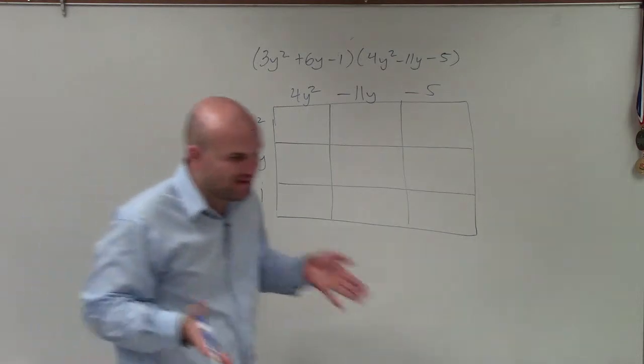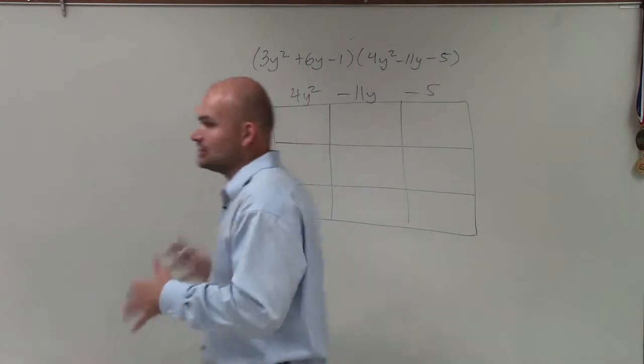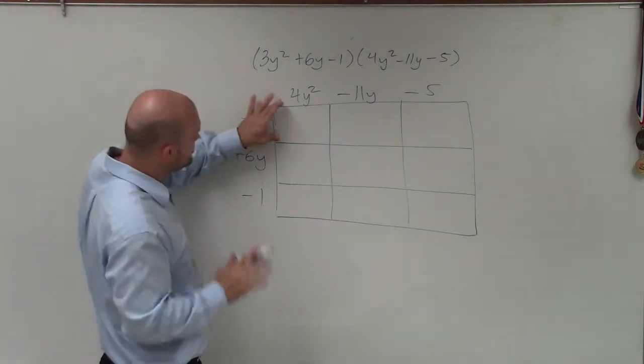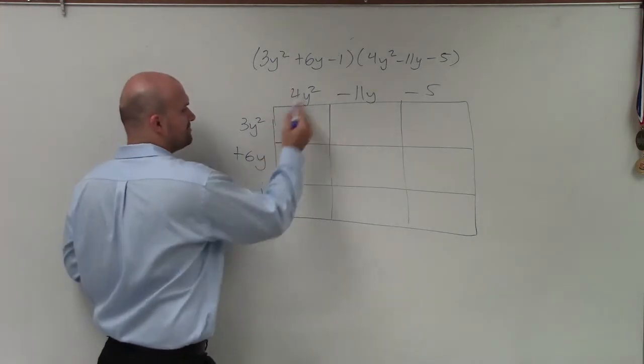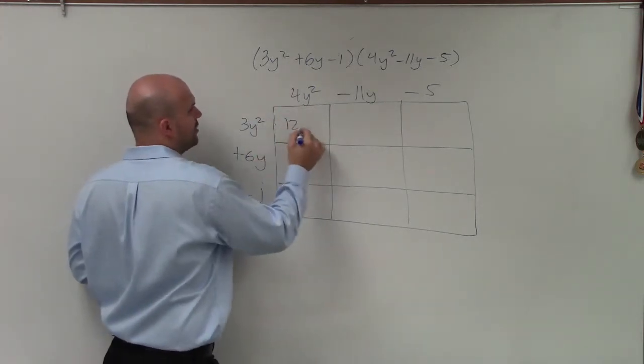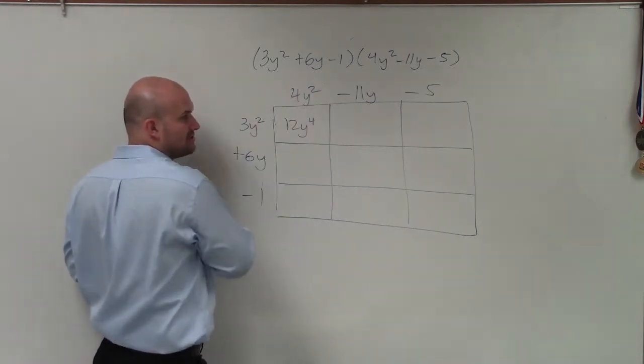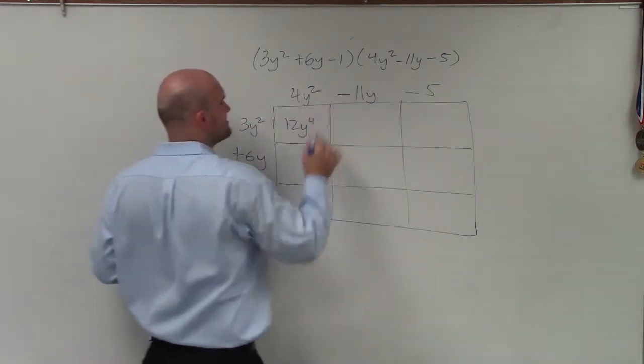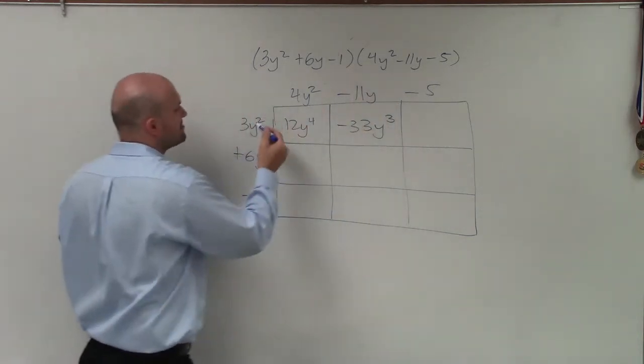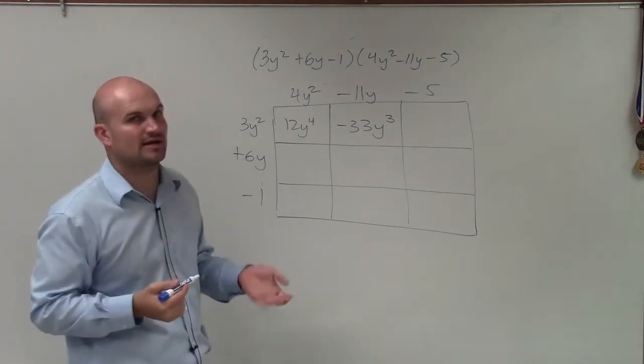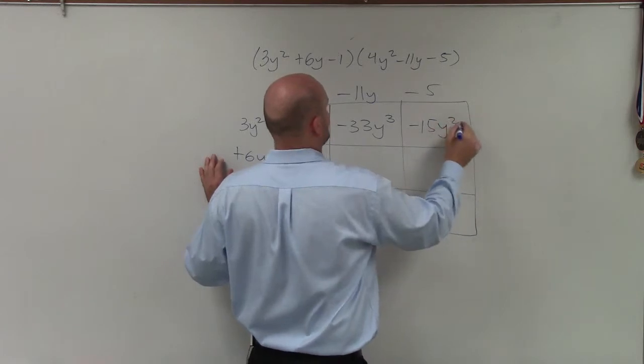Now to multiply these, basically what I'm doing—the way to represent the product of all of these terms by each other—is just to find the area of each little rectangle or square. So here I just multiply these. So 3y² times 4y² is 12y to the fourth. Remember, add the exponents, right? 3y² times -11y is -33y³. Again, 11 times y times y² is y³. 3y² times -5 is -15y².